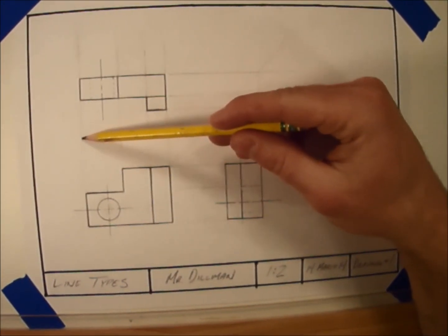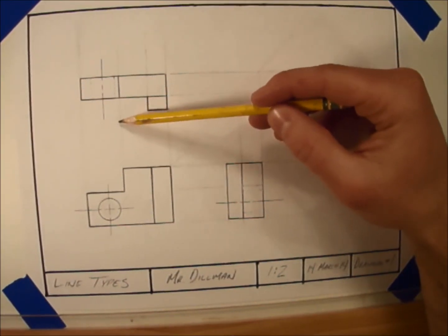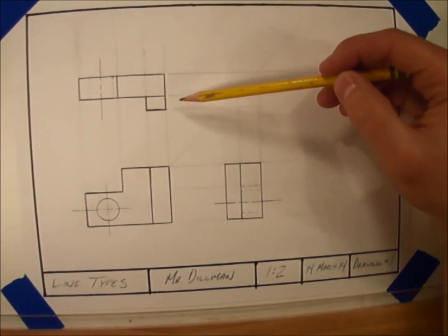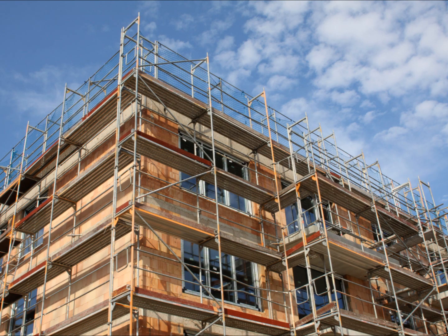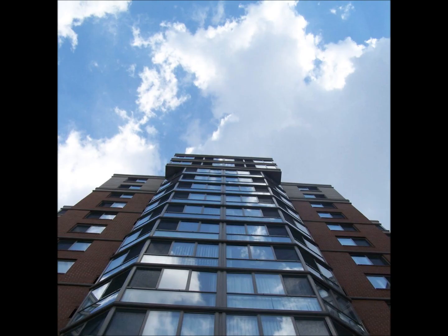Last but not least are construction lines. Construction lines are not actually part of our object. We use them to help us make the drawing accurately. Think of them like scaffolding on a skyscraper. It's not actually part of the building, and when the building is complete, the scaffolding will be taken down.